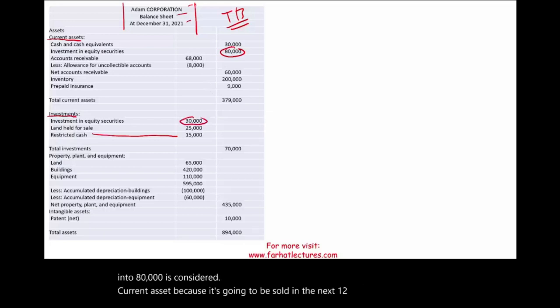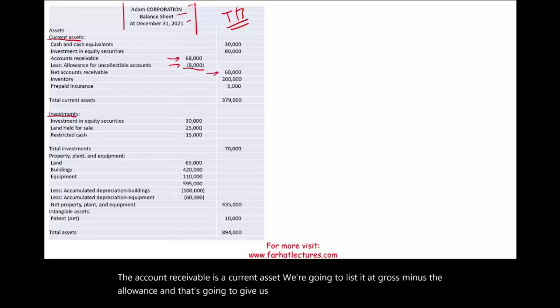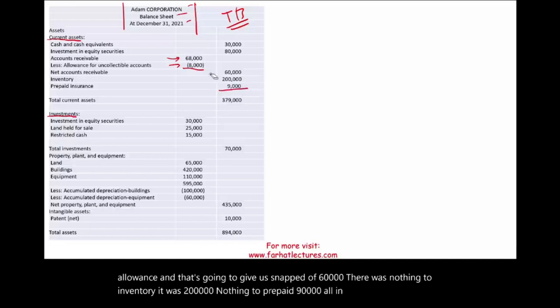The account receivable is a current asset. We're going to list it at gross minus the allowance, and that's going to give us net of $60,000. There was nothing to inventory. It was $200,000. Nothing to prepaid, $90,000. All in all, we add up all the current assets, and they will add up to $349,000.